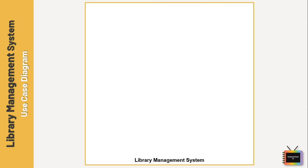Let's start with the library management system. I'm adding an actor — member. Without the member, the library management system is of no use, as it is the member who will request books. Next I am adding the actor librarian, who has a key role in this system.